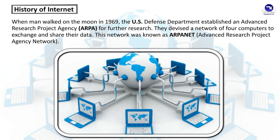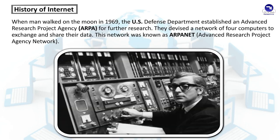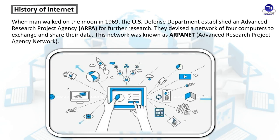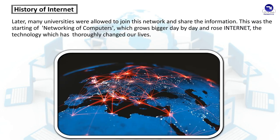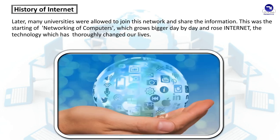History of Internet: When man walked on the moon in 1969, the U.S. Defense Department established an Advanced Research Project Agency, ARPA, for further research. They devised a network of four computers to exchange and share their data. This network was known as ARPANET — Advanced Research Project Agency Network. Later, many universities were allowed to join this network and share information. This was the starting of networking of computers, which grew bigger day by day, and grew into the Internet — the technology which has thoroughly changed our lives.